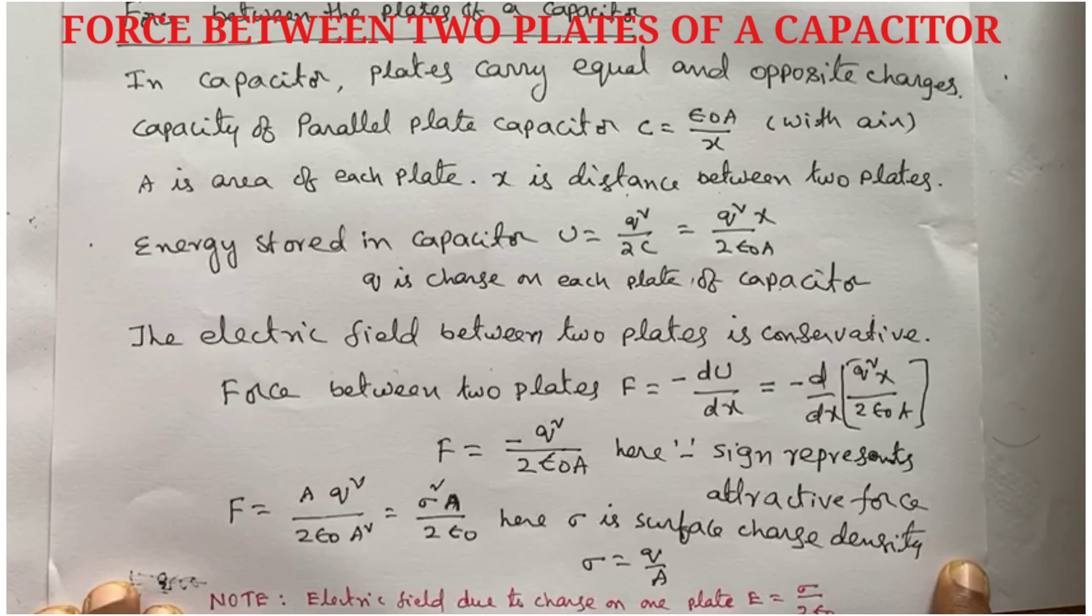Q square by A square equals sigma square, where sigma is surface charge density. So force F equals sigma square A by 2 epsilon not.